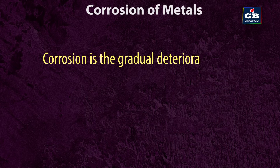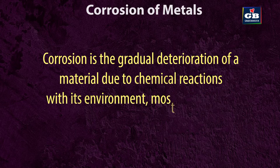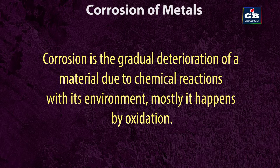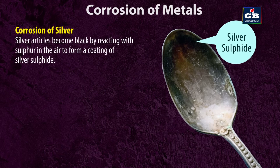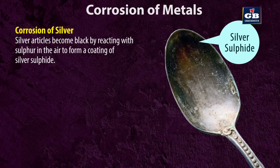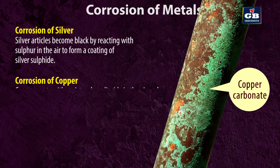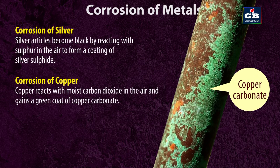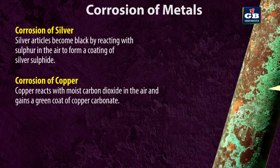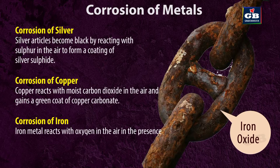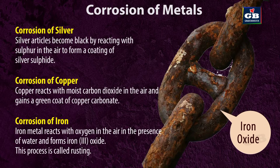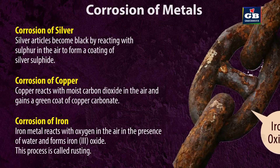Corrosion is the gradual deterioration of a material due to chemical reactions with its environment, mostly by oxidation. Silver articles become black by reacting with sulfur in the air to form silver sulphide. Copper reacts with moist carbon dioxide in the air and gains a green coat of copper carbonate. Iron reacts with oxygen in the presence of water to form iron oxide — this process is called rusting.